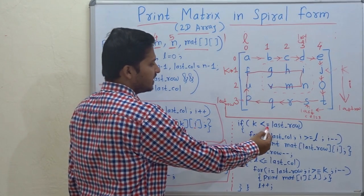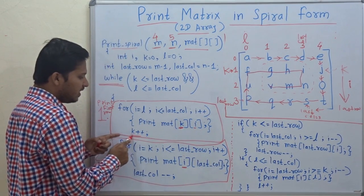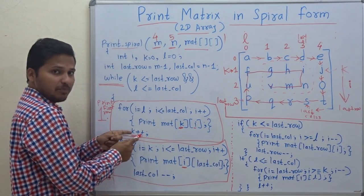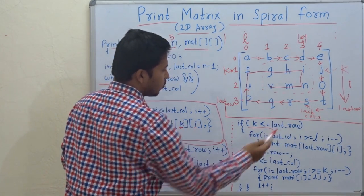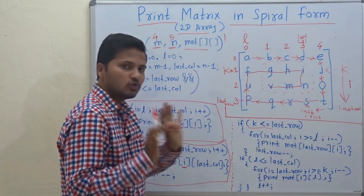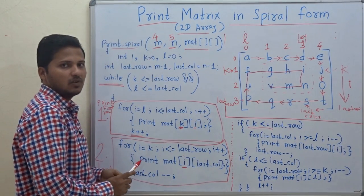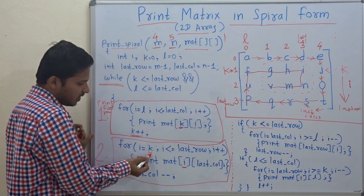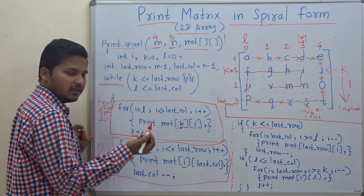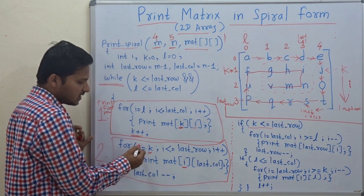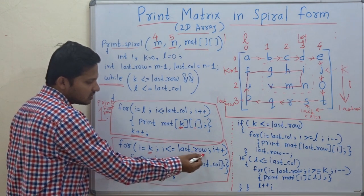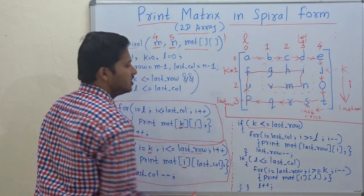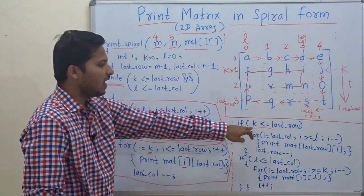If K is less than or equal to last row — as we incremented K earlier, we are checking whether K has not gone beyond last row. Is K still less than or equal to last row? We are confirming this here. You may ask why we didn't confirm it for the second block — because there, I equal to K means the value of K is assigned to I, and I less than or equal to last row is checked automatically there.